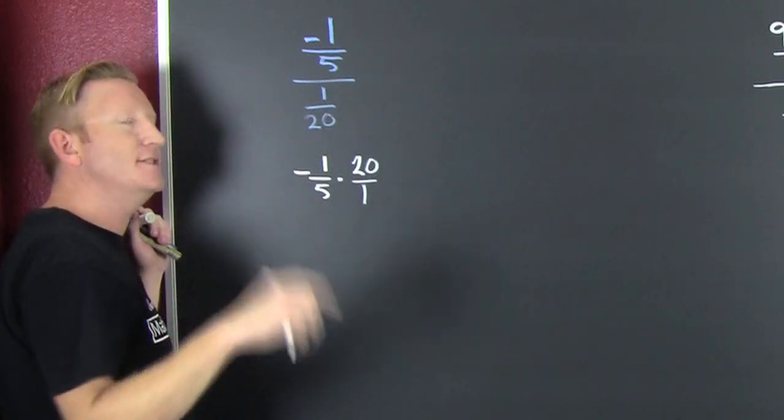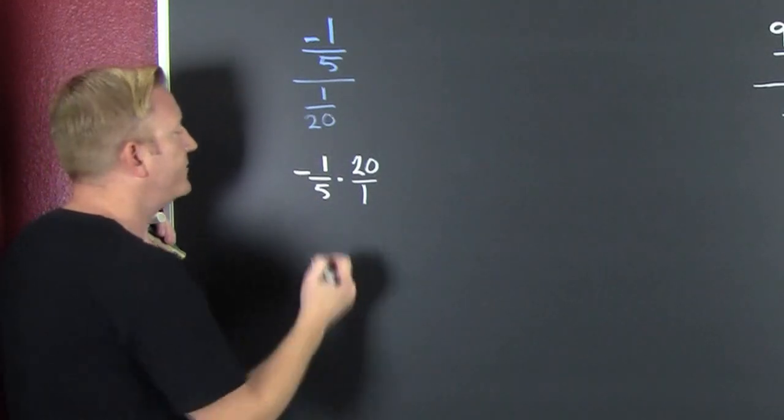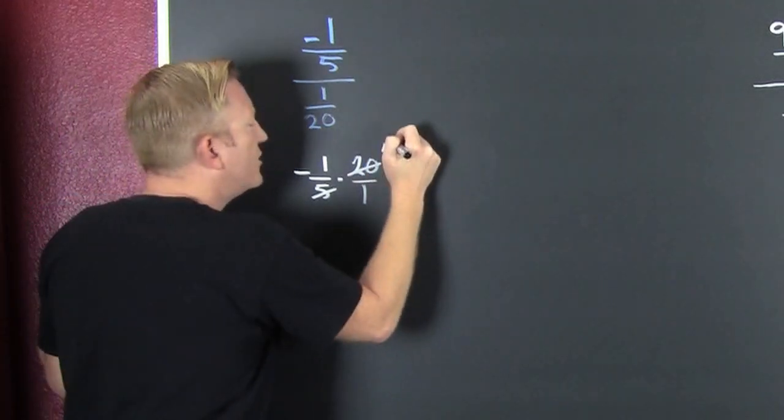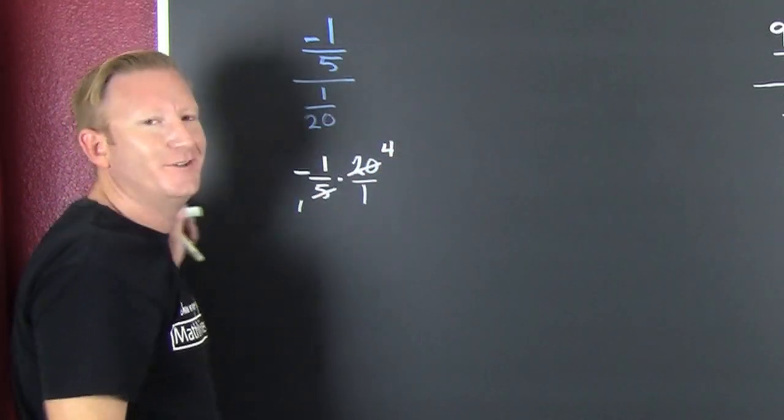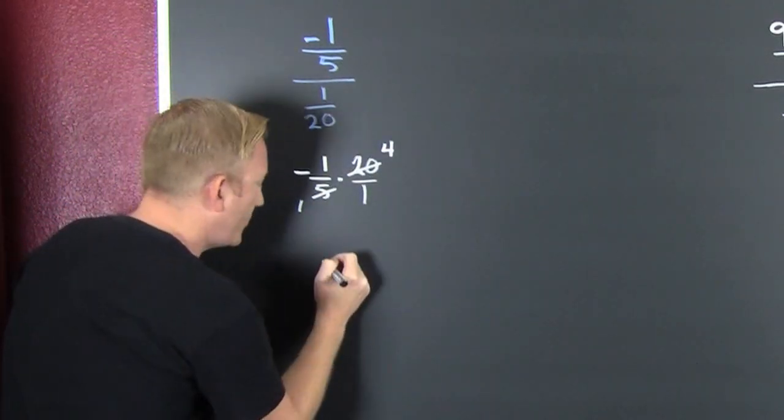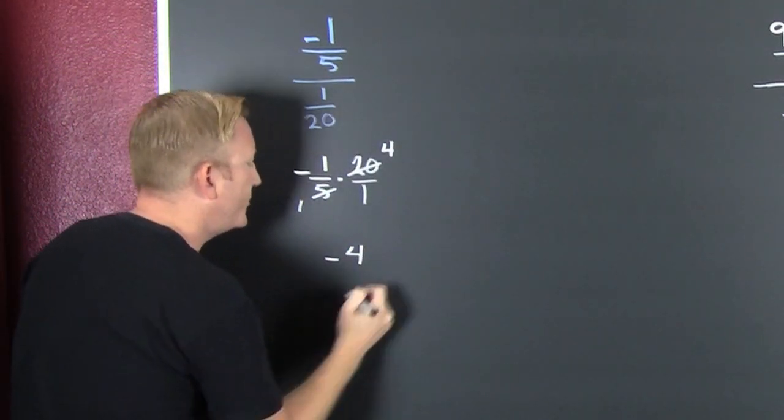Now you can multiply straight across, or you can see that you have a common factor of five. And they fight. Oh, you're a four. You're a one. You notice whenever they fight, they call each other names. So then, boom, we multiply straight across, and we get a minus four. Sure.